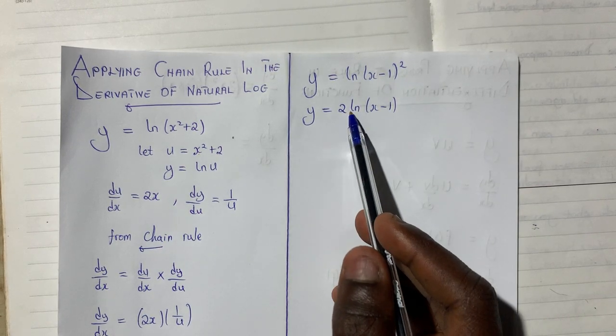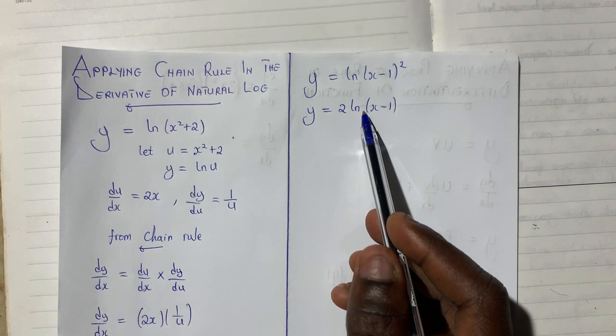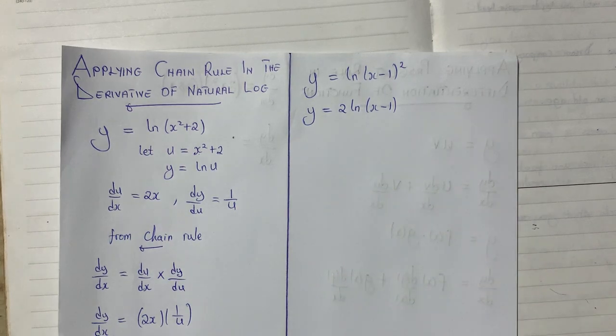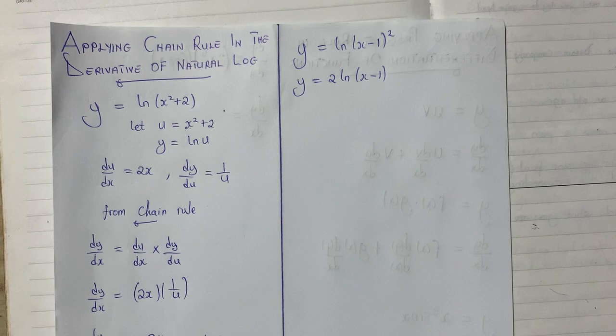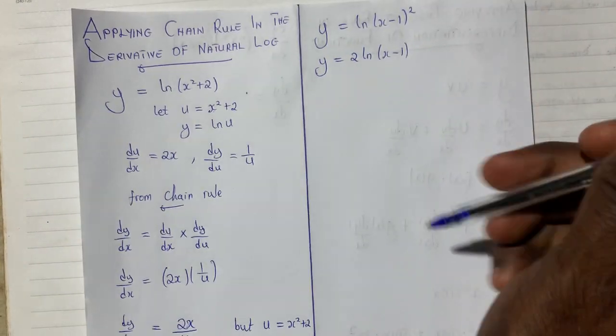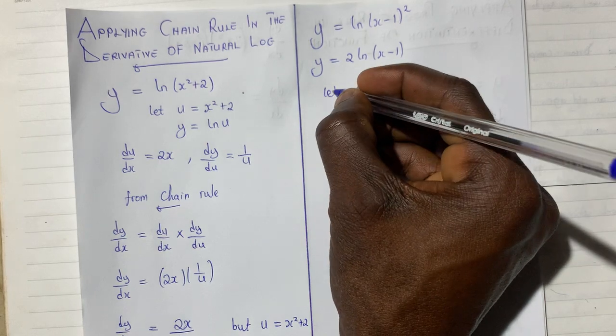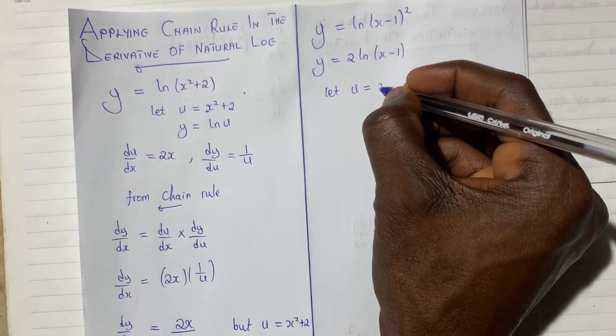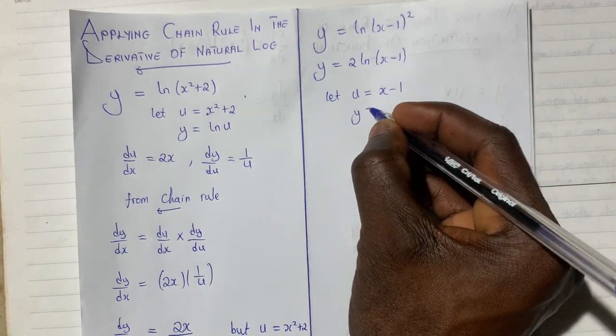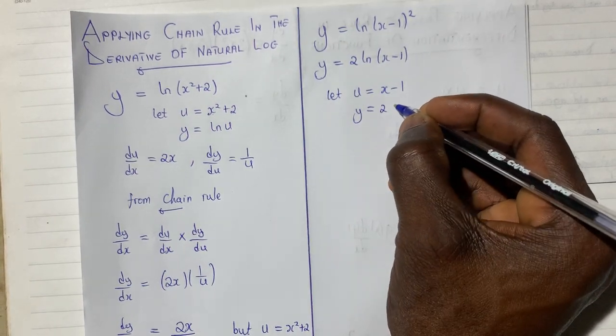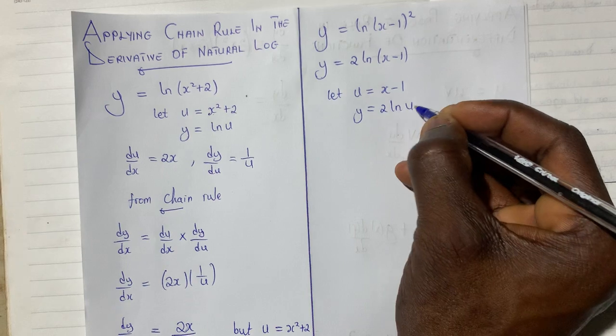This means that I will not be applying product rule. I can then represent everything in the brackets here with u like I did in the first question. I will say that let u be equal to x minus 1. So therefore, the equation becomes y equal to 2 ln u.